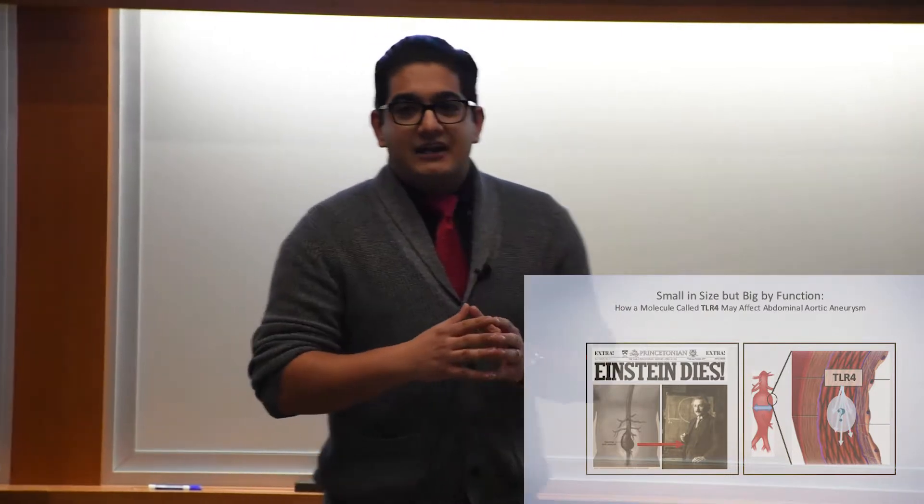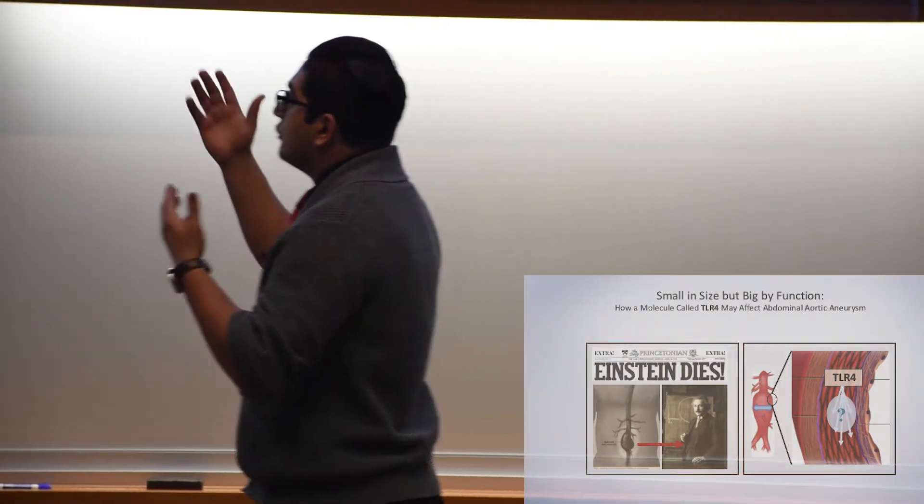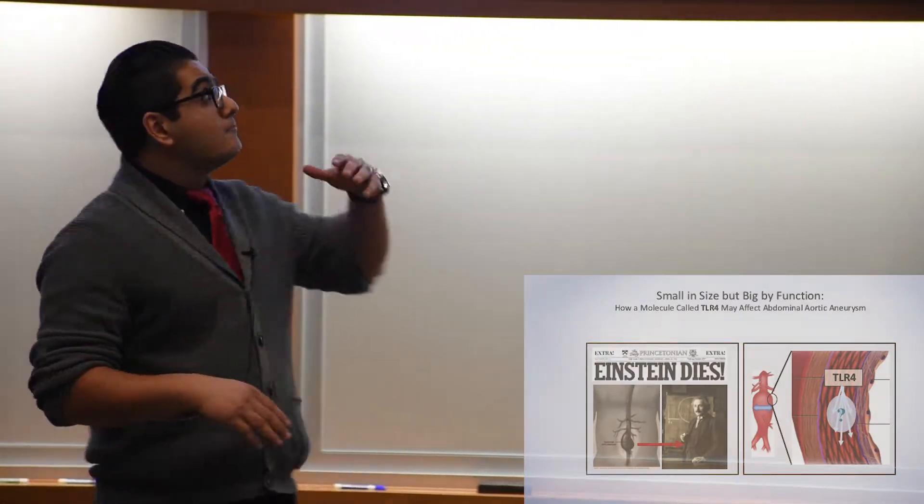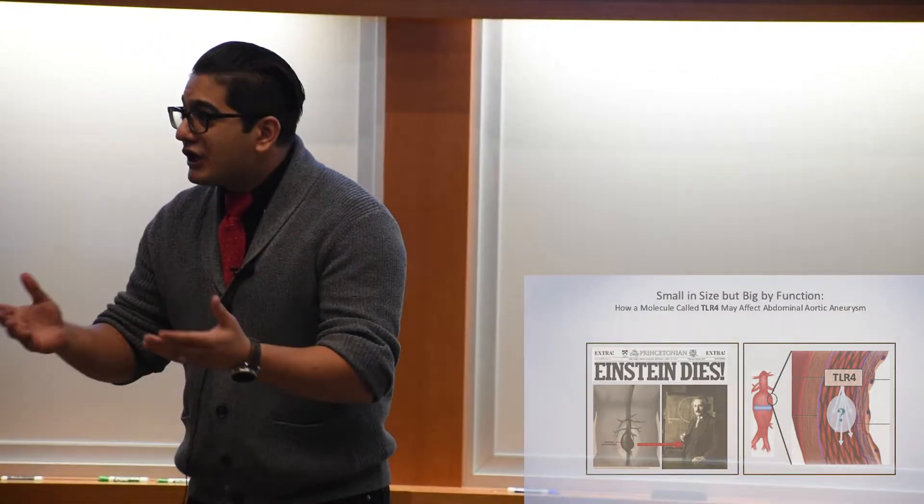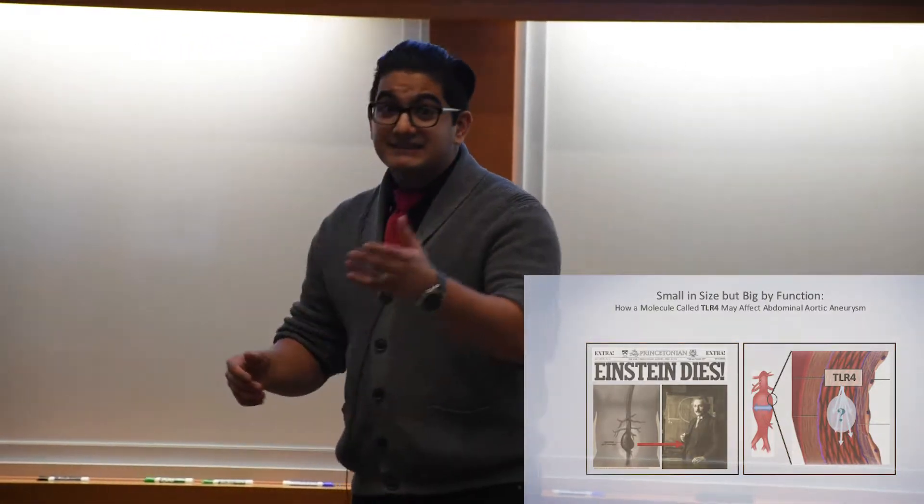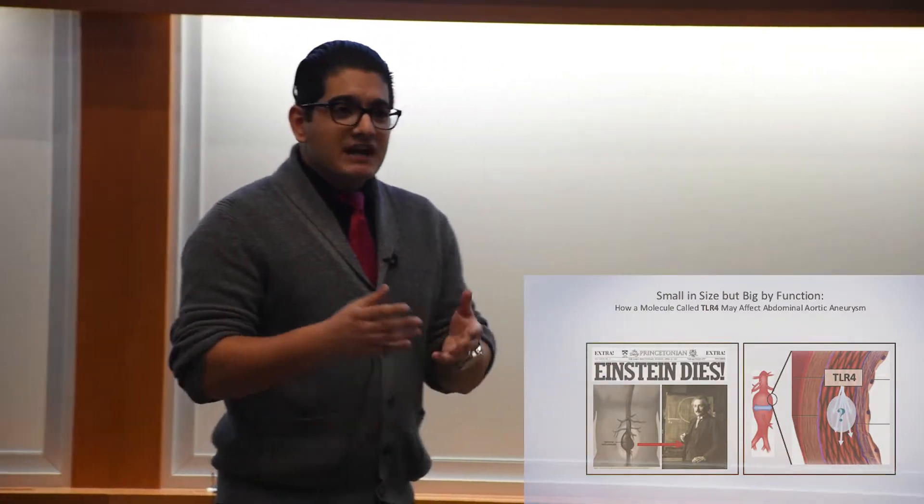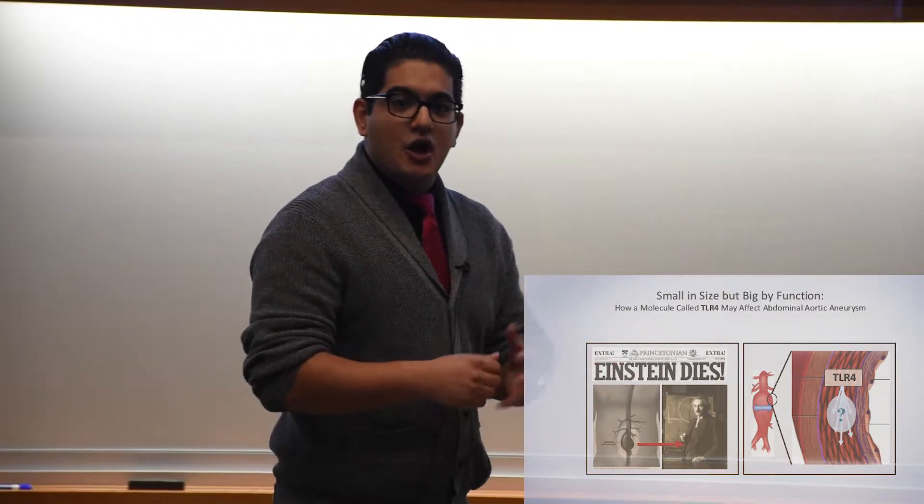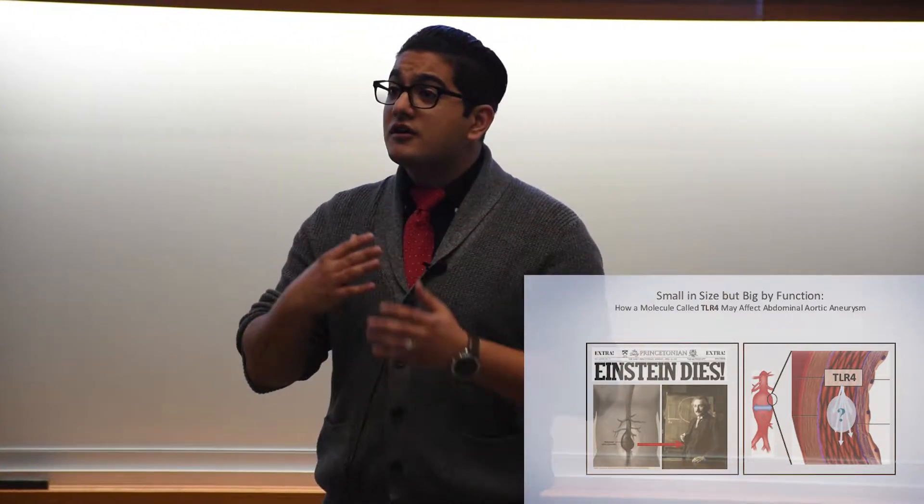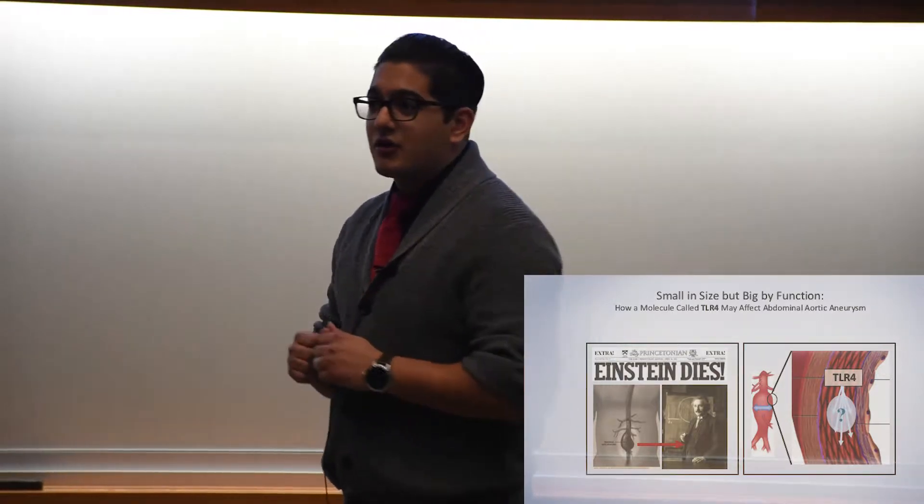Abdominal aortic aneurysm is basically an enlargement or ballooning of the abdominal aorta. Aorta is the major blood vessel that supplies blood to your body. It's about the thickness of a garden hose, runs from your heart through the chest and goes down to your abdomen.